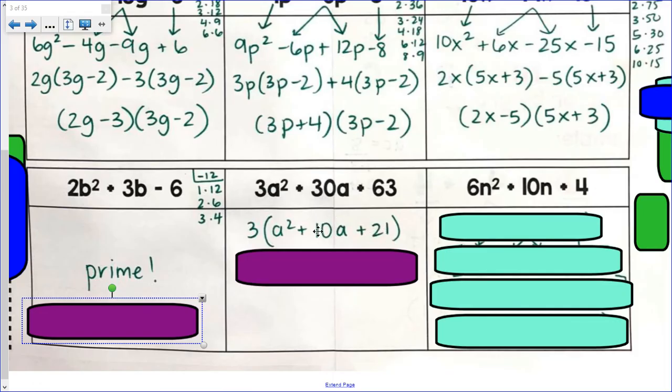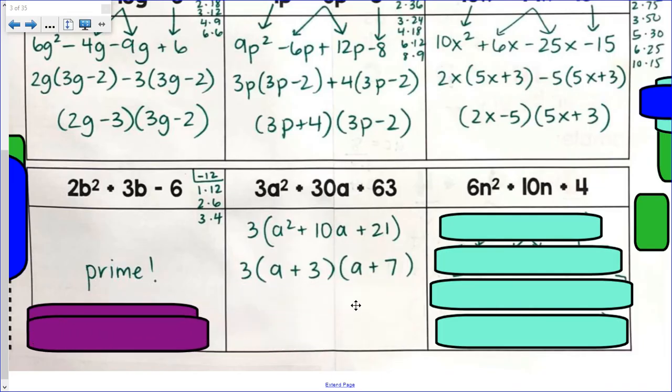1 times 21? No. 3 times 7? Yeah. And actually, look, guys, it factors really clean. It's one of those types of trinomials. Imagine the 3 wasn't there. It just kind of gets brought down. Same thing here.